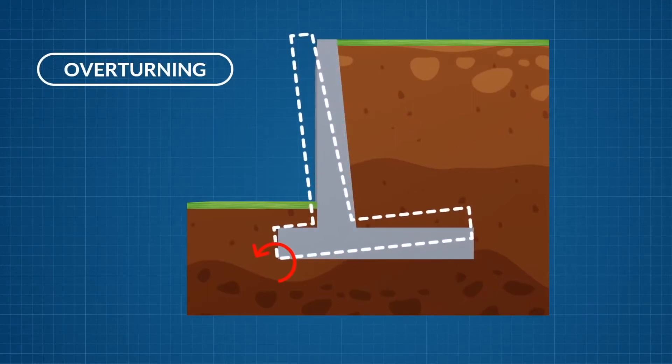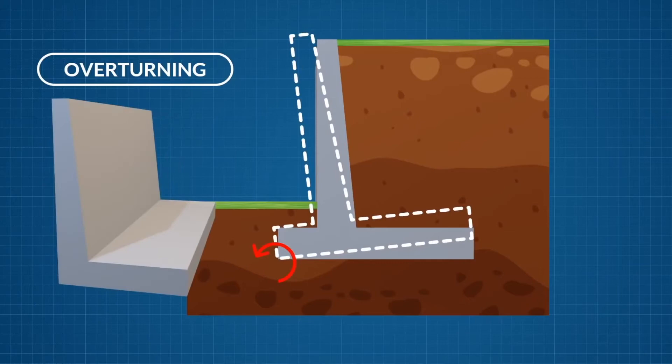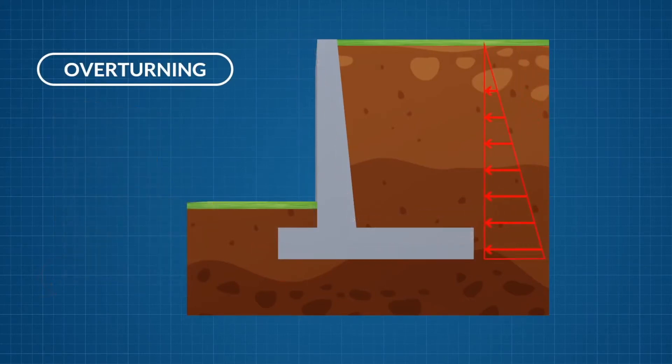In the absence of the toe slab, the base directly below the wall stem will act as the center of rotation. The active earth pressure acts as a destabilizing moment on the wall and the passive earth pressure will act as a stabilizing moment. The weight of the soil on the heel slab will act as a stabilizing moment.